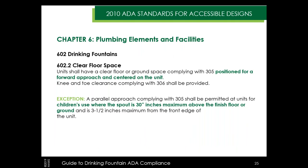In Chapter 6, we get into specifics regarding public elements and measurements. Section 602.2 covers clear floor space and the necessity to have that space centered on the unit, not on the alcove — this is for a forward approach. A parallel approach must be set up differently. Knee and toe clearance must also be available. There is an exception for parallel approaches to children's use units — knee and toe clearance begins to diminish as we lower fountains for children's use, and children's wheelchairs are very frequently adult-sized wheelchairs since custom child wheelchairs can be very expensive.